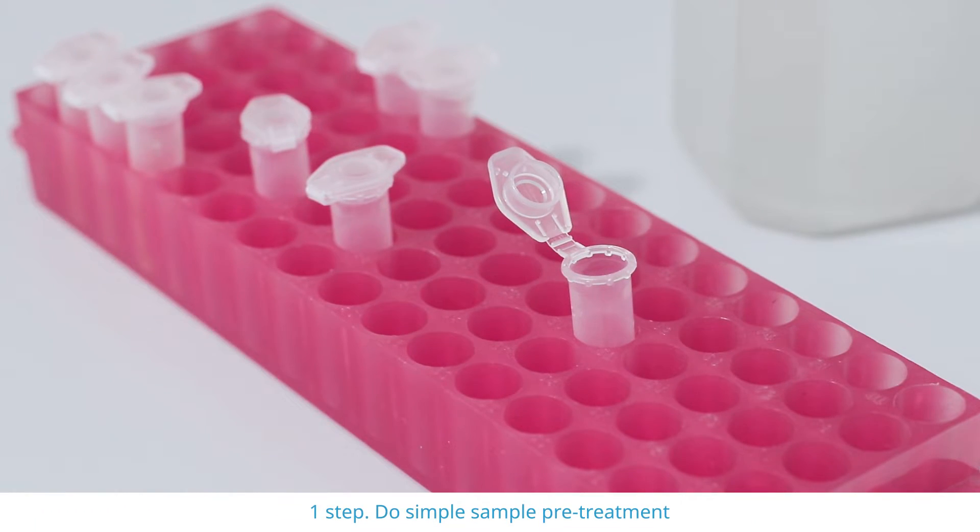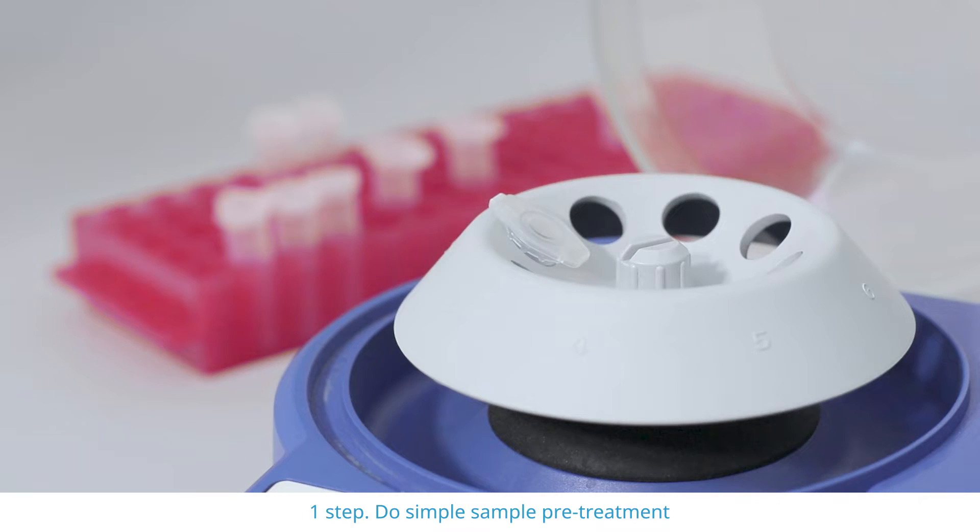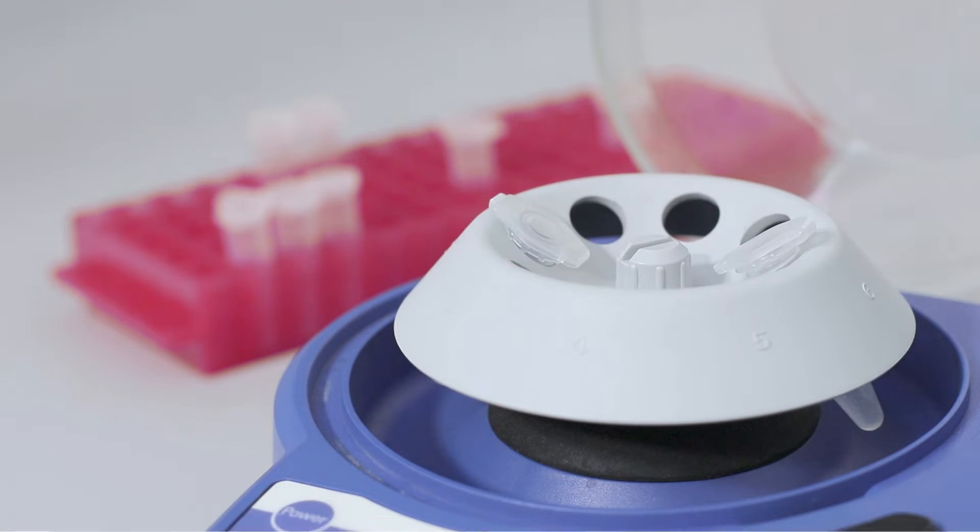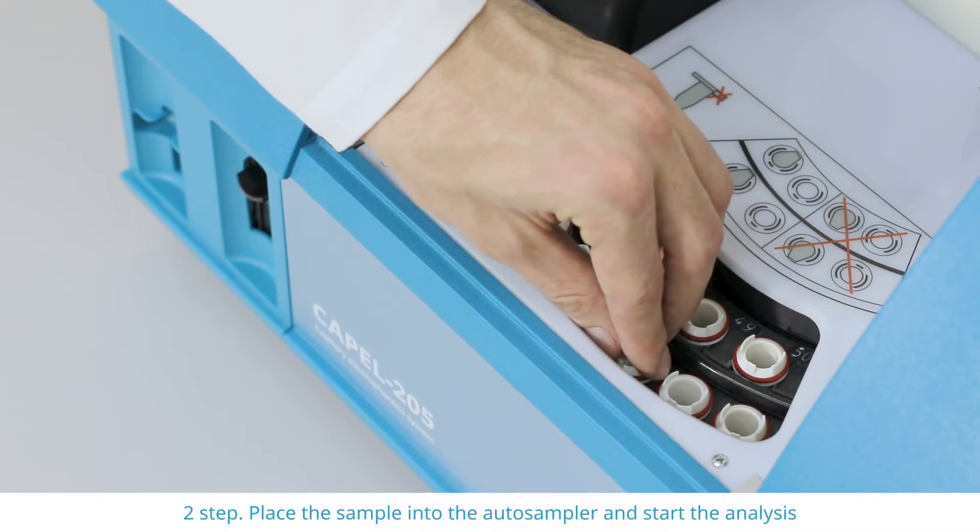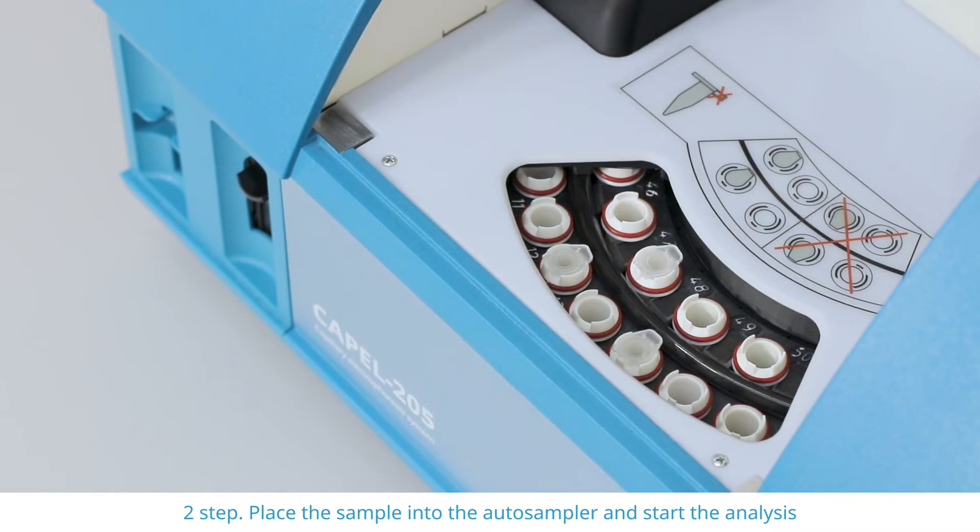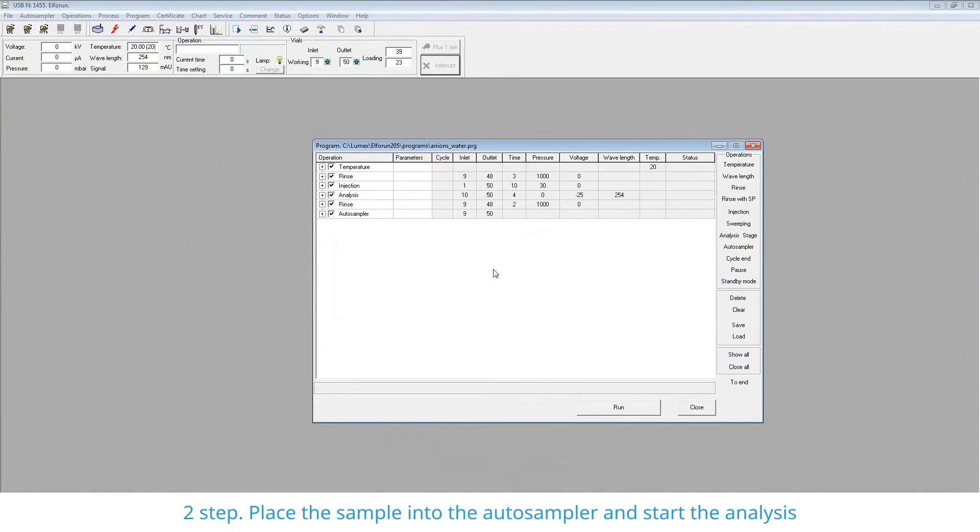The sample pretreatment usually consists of just filtration, dilution if necessary, and centrifugation. Then we place the centrifuge tube containing the pretreated sample directly into the autosampler and start the measurement.